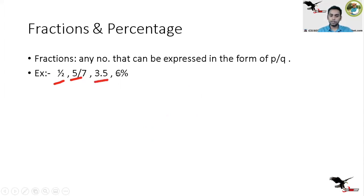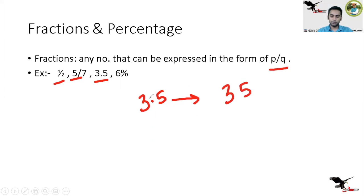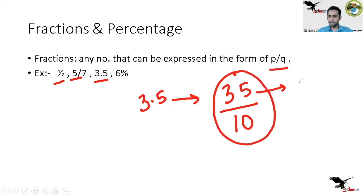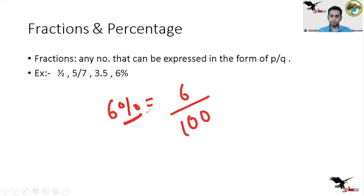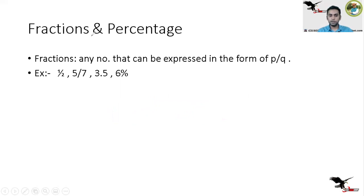Now consider the number 3.5 — we have to express this in the form of p by q. I'll write 3.5 and remove the decimal point; after removing the decimal point, 10 comes in the denominator, giving 35/10, which is in the form of p by q. Similarly, for 6 percent, I can express it as 6/100 — after removing the percentage symbol, I add 100 in the denominator. This becomes my numerator and this becomes my denominator.